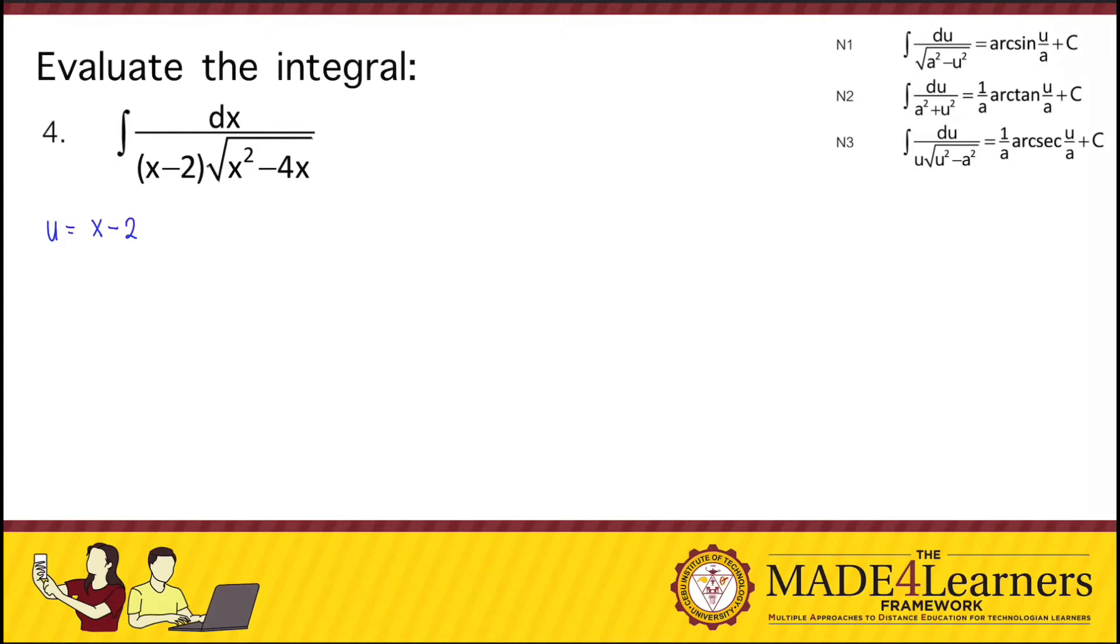If it's x minus 2, then inside the radical sign there must be x minus 2 quantity squared. So then again, we perform completing the square. So if we have x squared minus 4x, what would be the missing third term for us to be able to make a perfect square trinomial? So we divide the coefficient here by 2 and raise it to the power of 2. So 4 divided by 2 is just equal to 2, and when you raise it to the power of 2, that would be equal to 4.